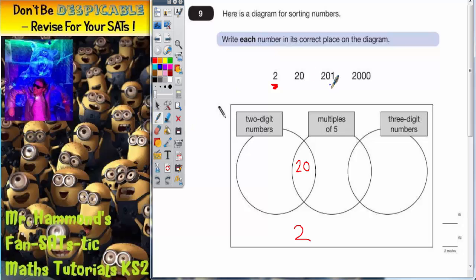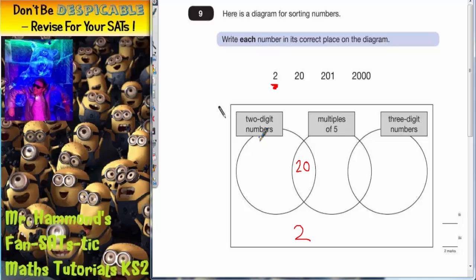Right, the number 201. Has it got 2 digits? No it hasn't. Is it a multiple of 5? Well multiples of 5 end in a 0 or a 5 and that ends in a 1 so no it is not. But is it a 3 digit number? Yes it is.